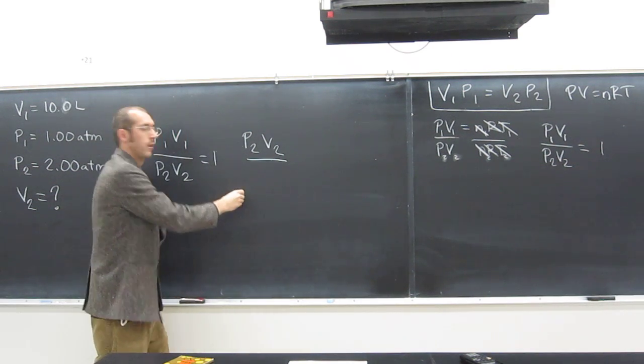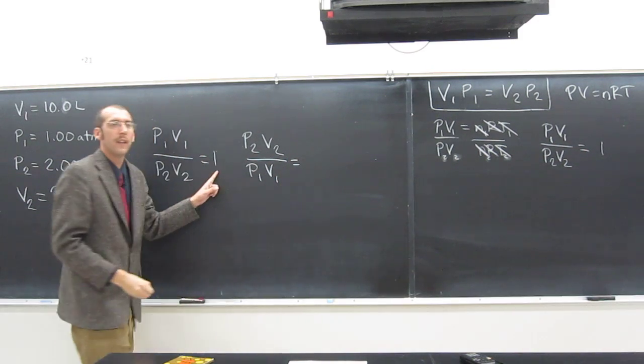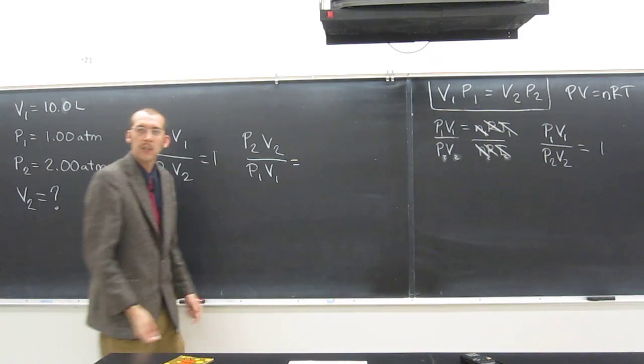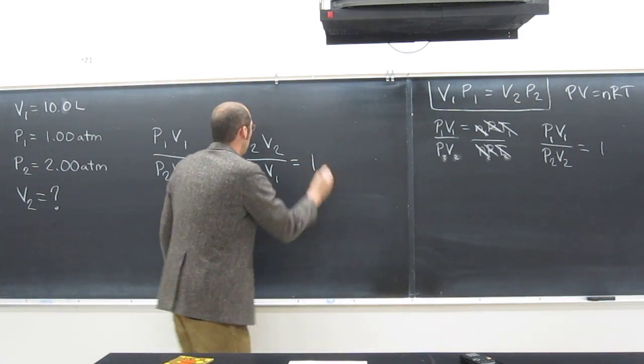And what's on the bottom? P1 V1. What if I flip the other side over? What do I get? Just 1. Because this is really 1 over 1, right? Okay?